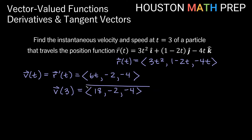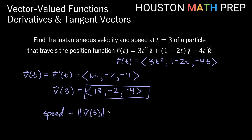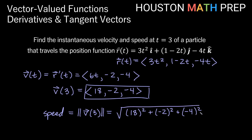That is our instantaneous velocity at t equals 3. For speed, we calculate the magnitude of the velocity vector at t equals 3: the square root of 18 squared plus negative 2 squared plus negative 4 squared. That gives us the square root of 344, which can be reduced to 2 times the square root of 86. Speed is simply the magnitude of the velocity vector.